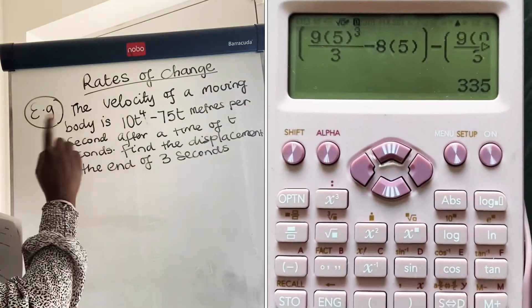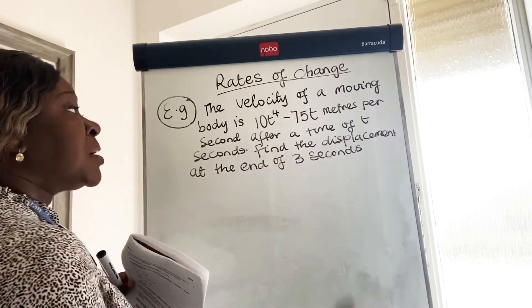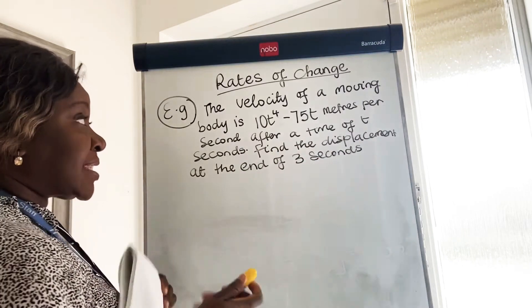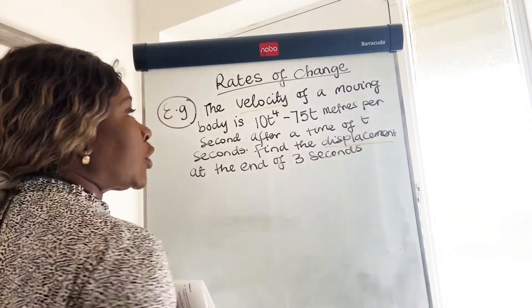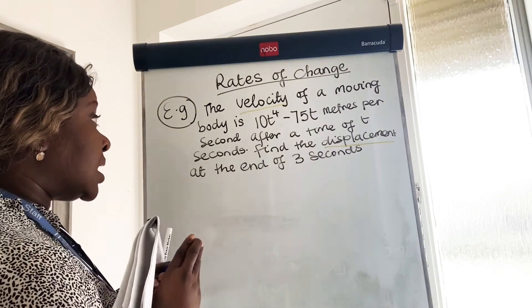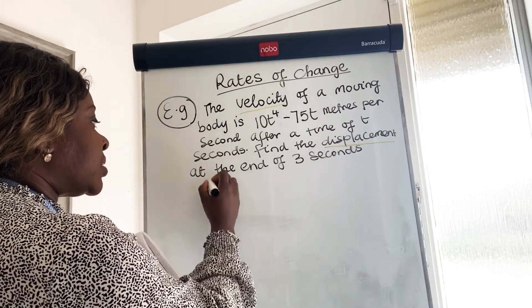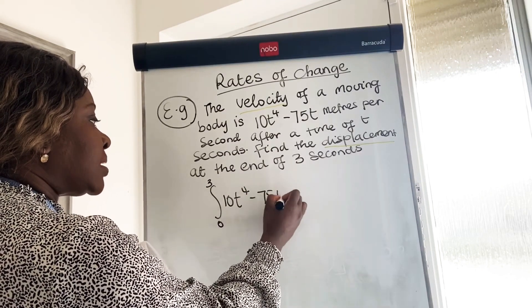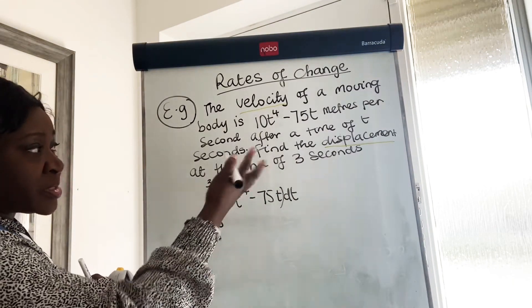Here's another example. The velocity of a moving body is 10t to the power of four minus 75t meters per second after a time of t seconds. Find the displacement at the end of three seconds. It's giving you the velocity and asking you to find the displacement, so you've got to integrate. This time you want to assume that the initial time is zero, so you'll be integrating from zero to three of 10t to the power of four minus 75t dt.